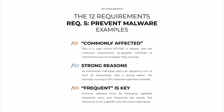Some examples: First, the definition of 'commonly effective' is an area where PCI DSS is relaxed — it's a minimum requirement. Air-gap machines or mainframes are not included, but could be under different information security standards. Remember that individual users can request to turn off their antivirus temporarily, but need a good reason — for example, a CPU-intensive operation isolated from the network. Finally, 'frequent' is key. Antivirus software must be frequently updated, run scans, and log results. What's frequent? There's no specific definition, but it must make sense. Once a week or even once every two weeks is acceptable, but once every two months is not common sense — it's dangerous.